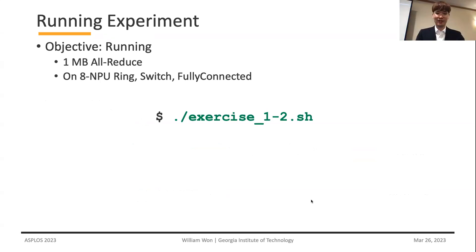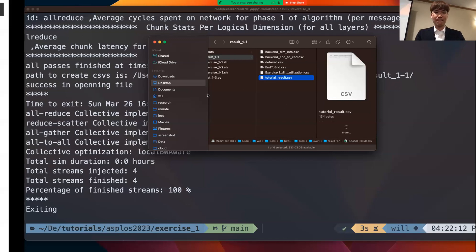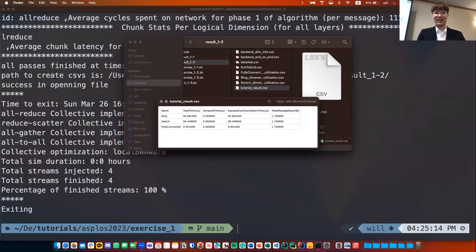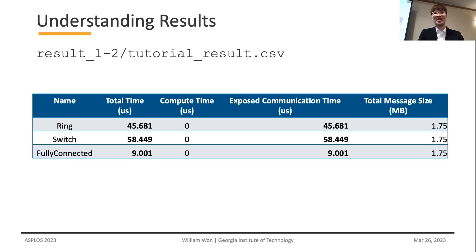Running exercise 1-2 calls AstroSym three times with the corresponding network and system input files. The results are dumped in the result 1-2 folder. The tutorial result CSV has three rows — one per topology. There is no compute time since we are running a single one-megabyte collective. The total communication time differs per topology, but the total message size going out is the same because we run the same collective with the same number of NPUs.